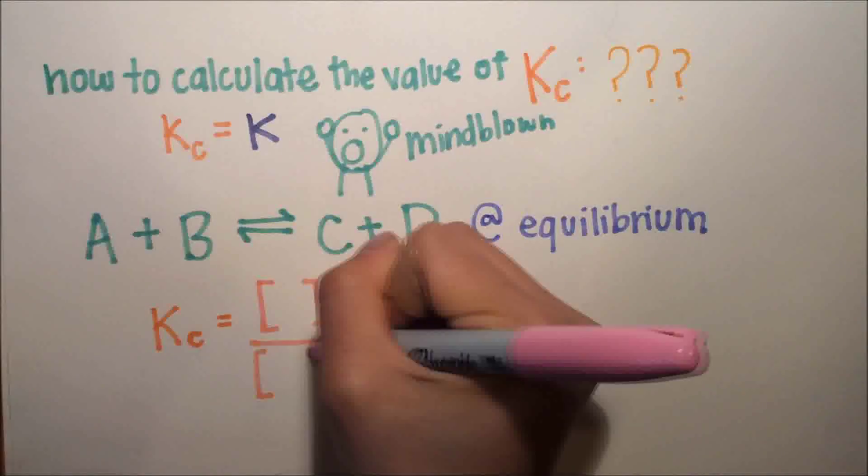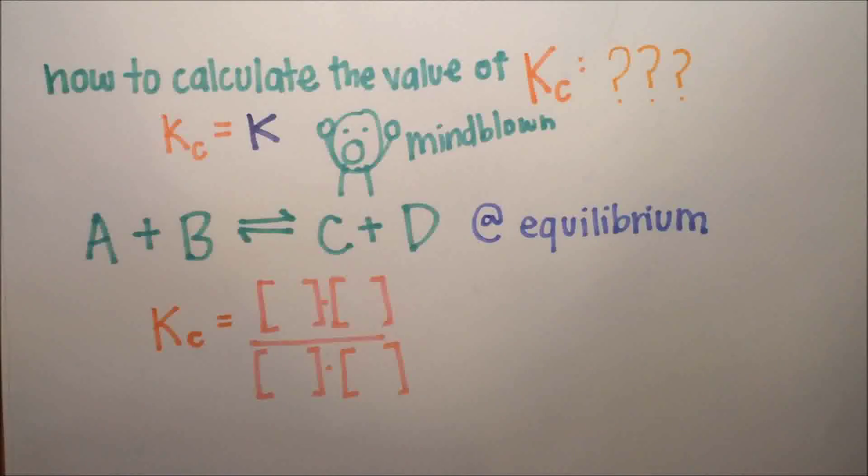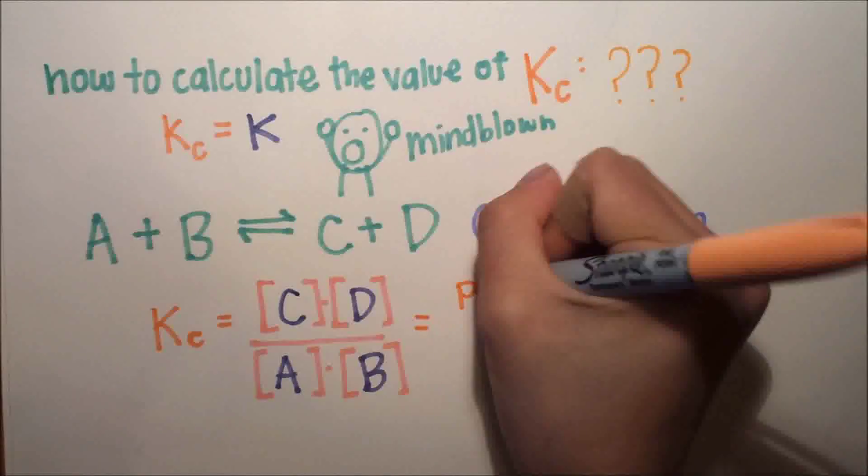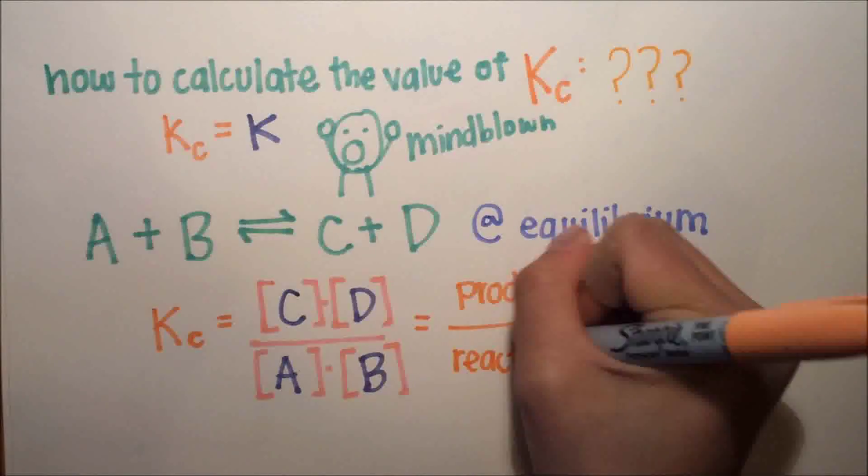You might want to plug in molarities instead of these pretend chemicals. So C times D over A times B, or you could multiply the products and multiply the reactants and divide it like that.